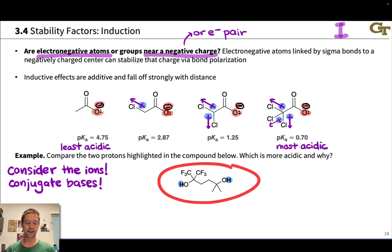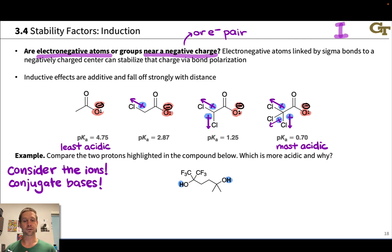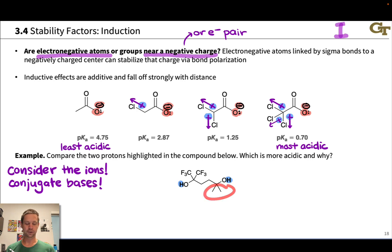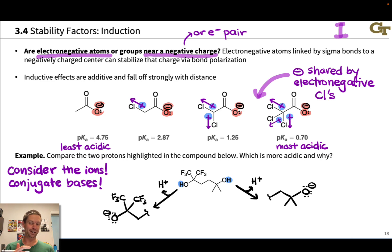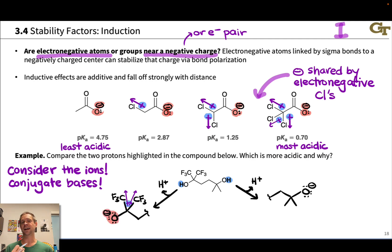Take a look at this compound, which contains two OH groups — plain vanilla OH groups with no resonance, since we have saturated centers next to the oxygen. The difference is we've got trifluoromethyl groups on the left-hand side and simple methyl groups on the right-hand side. Drawing the conjugate bases: the fluorines are very electronegative, and we've got six fluorines in the vicinity of this negative charge, pulling a lot of electron density towards themselves and sharing the negative charge quite effectively.